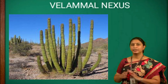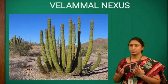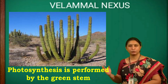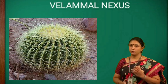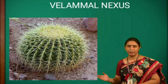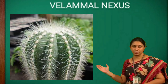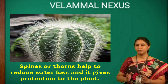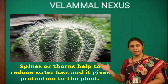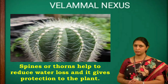Desert plants have a fleshy, large, thick stem to save water. The stem performs the function of photosynthesis. Most desert plants have thorns and spines — the leaves are modified into thorns. This special feature helps the plant to protect itself from being eaten by animals and to reduce water loss.